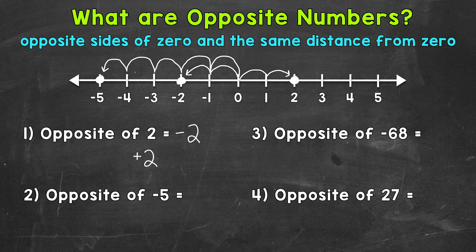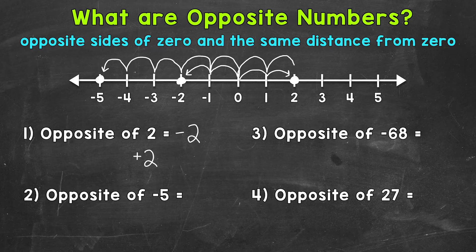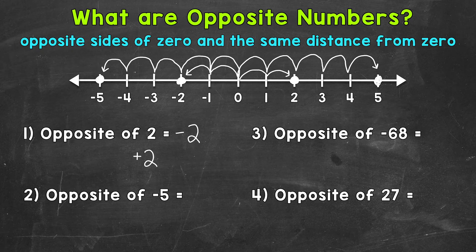So the opposite would be to the right of zero, that same distance of five. So let's do that. One, two, three, four, and five. And we end up at positive five. So the opposite of negative five is positive five.